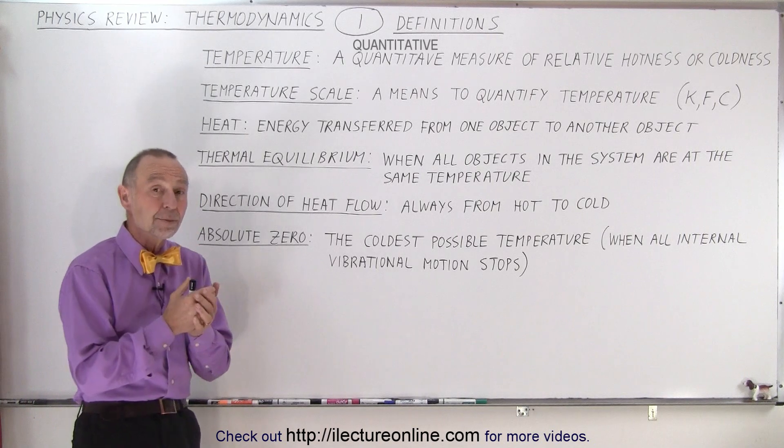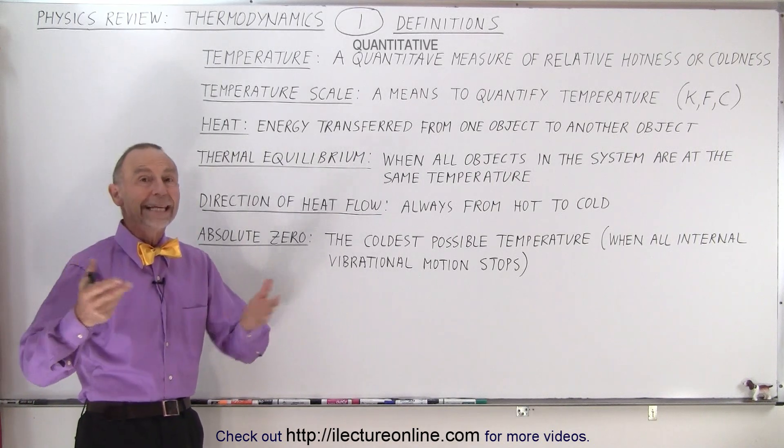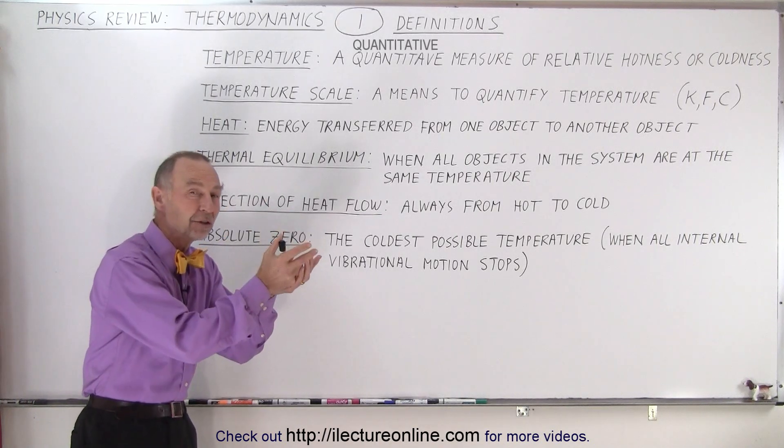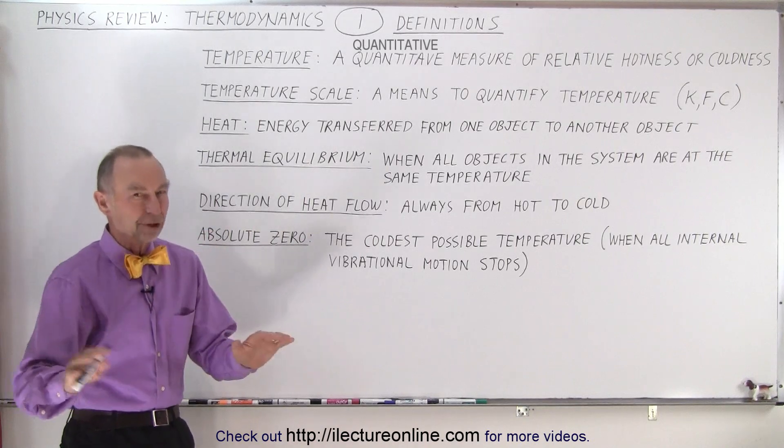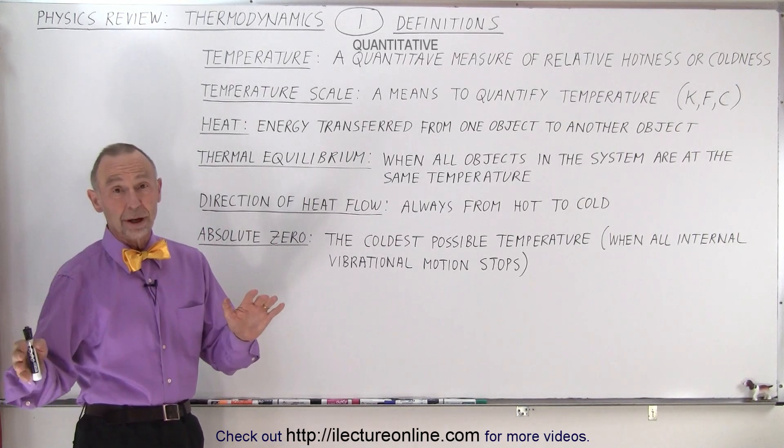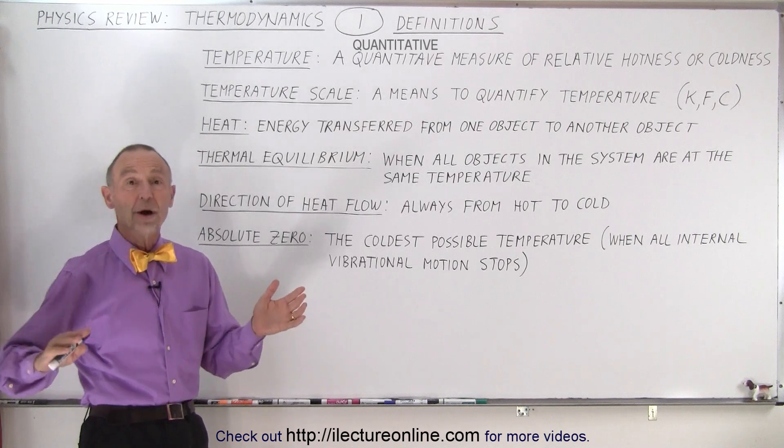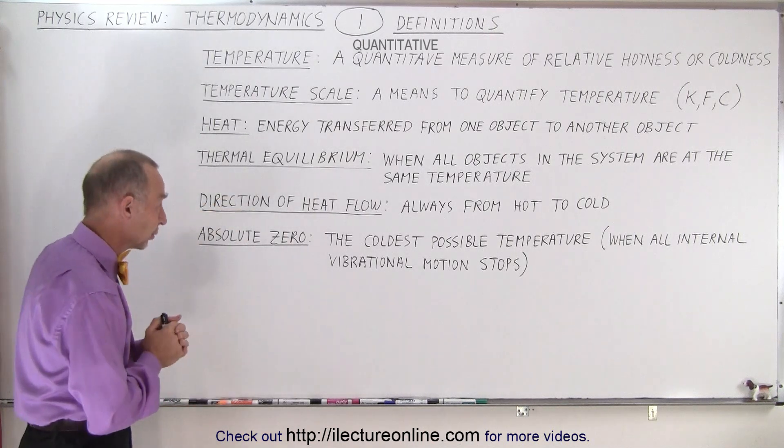If they're not at thermal equilibrium, if one object is hotter than another, heat will flow from the hot object to the cold object and never the other way around. Seeing heat traveling from a cold object to a hot object is like seeing water flowing uphill. It's not going to happen.